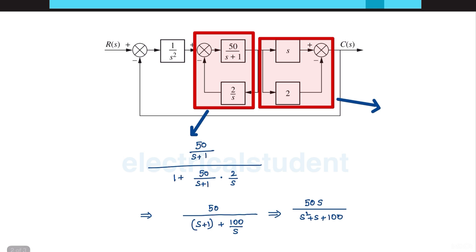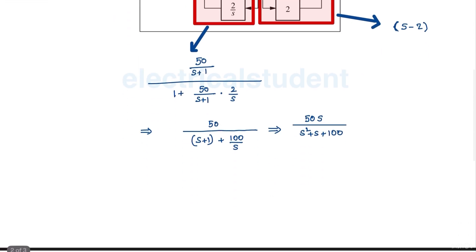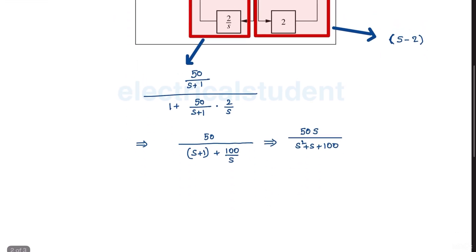For the second block, both blocks are connected in parallel, but at the summing point we get (s minus 2) because a minus symbol is given — it's essentially a difference function.